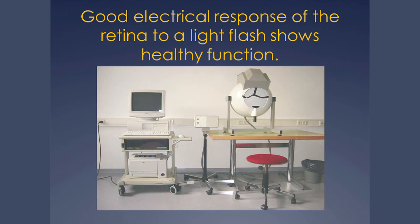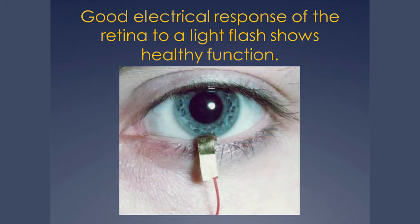Perhaps most important is electrodiagnostic testing. This equipment measures the retina's response to a flash of light, producing an impulse that can be detected on the skin via a gold electrode, picking up a weak signal that is then amplified. It tells us whether inflammation is currently active, the state of health of the retina, whether it's getting worse or better, and is very useful for making decisions about treatment.